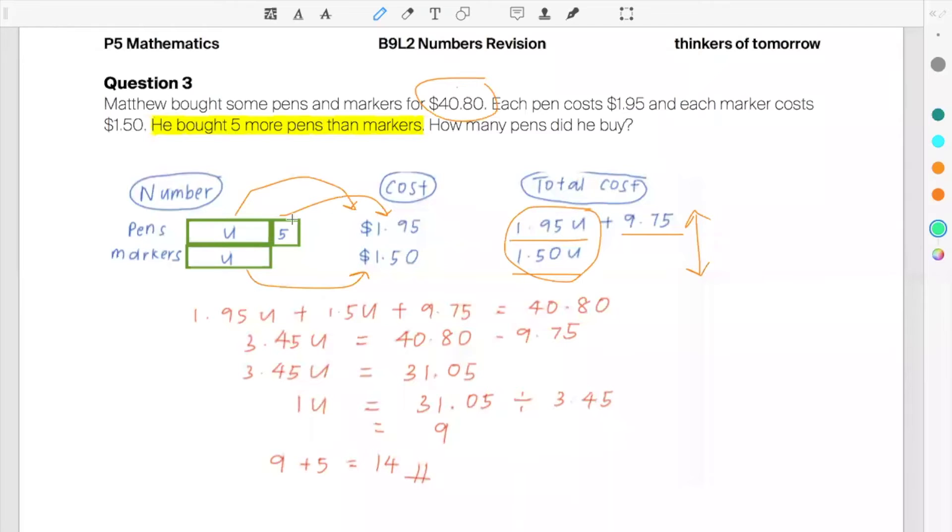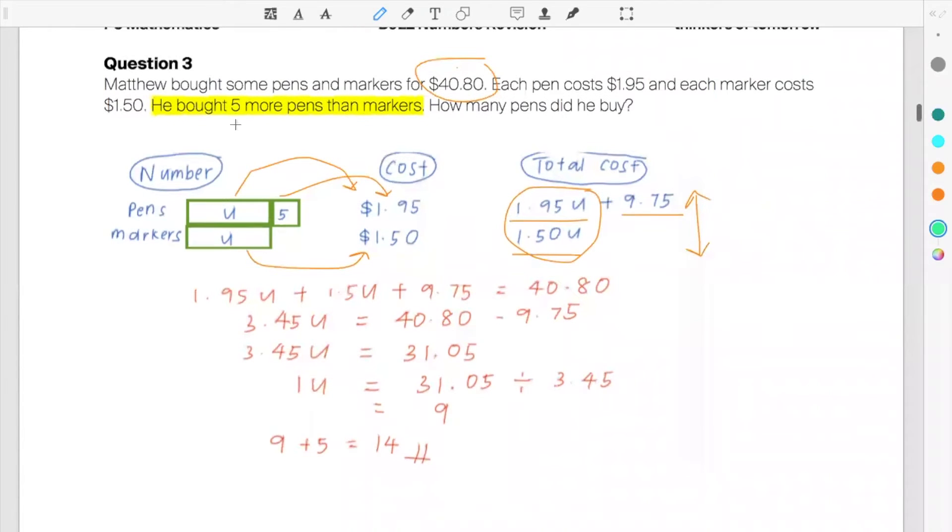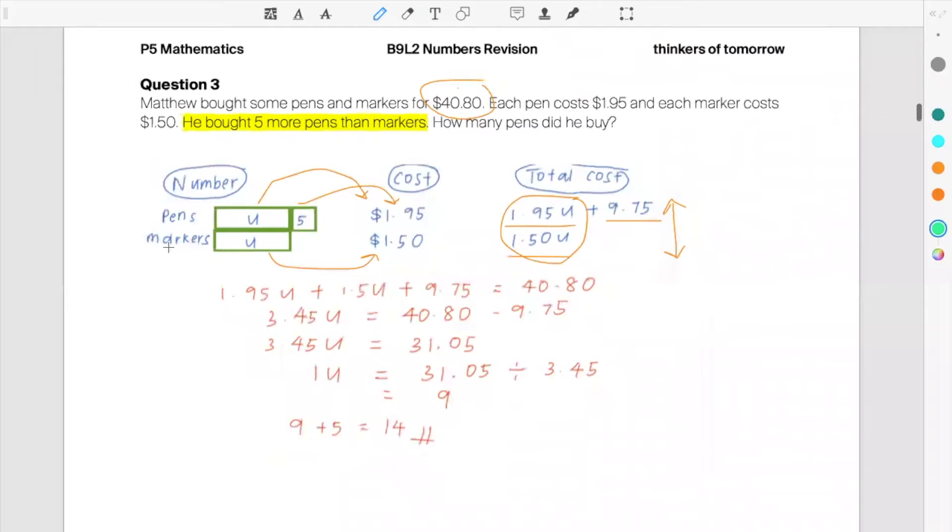For this question, you have it in terms of more than, less than. So I would suggest to you, and you have the value of each item, so we could use the number sum cost, number sum value approach. So two equal boxes.